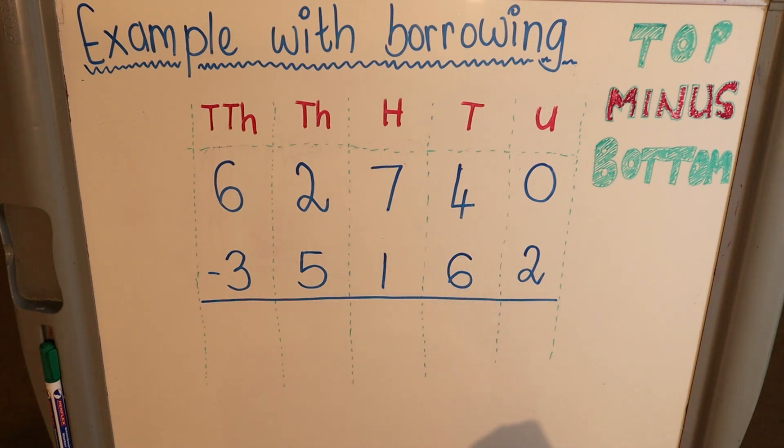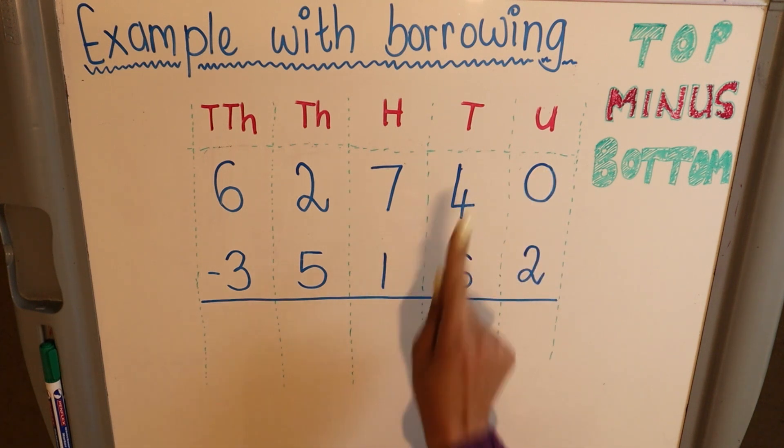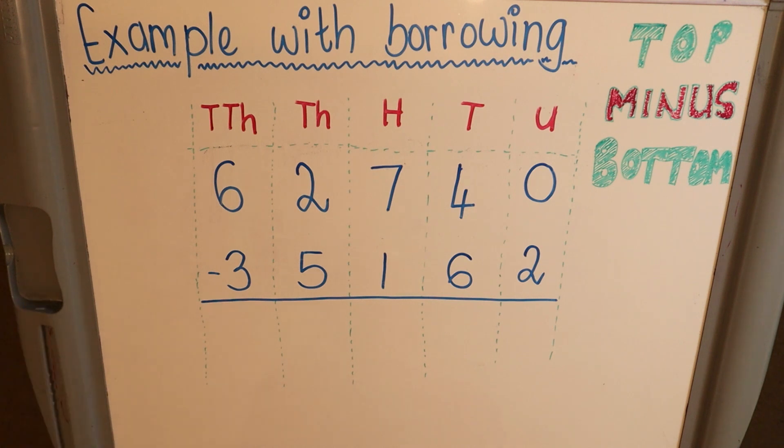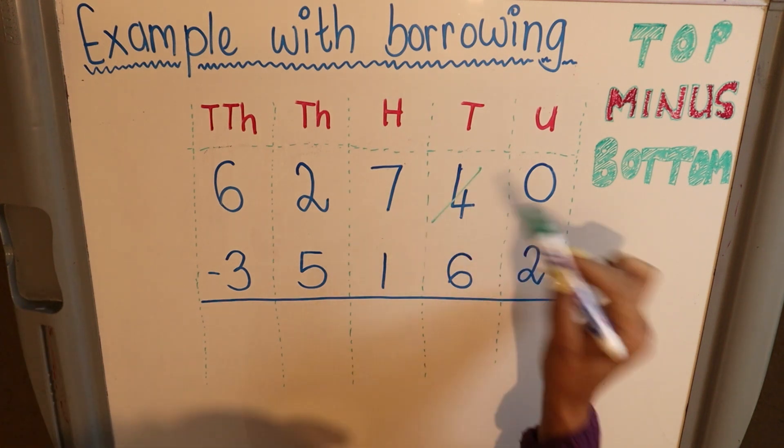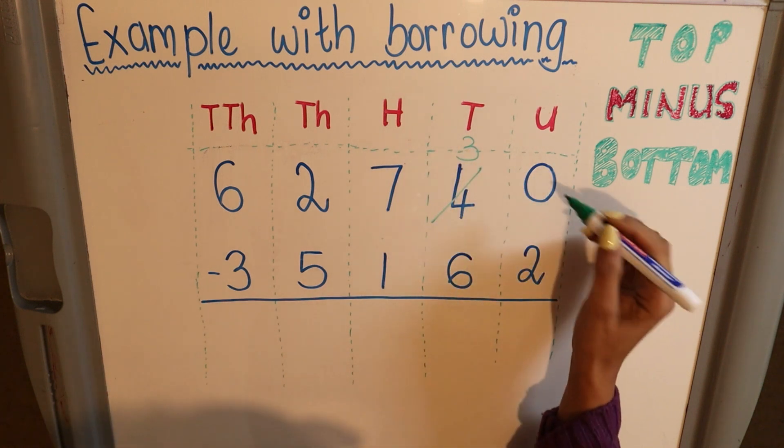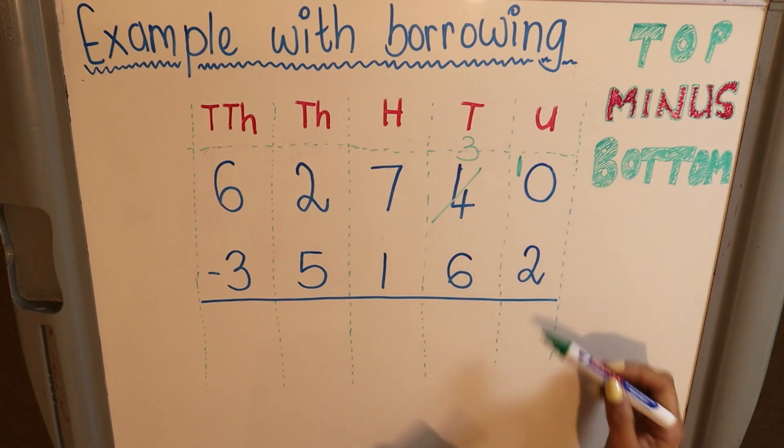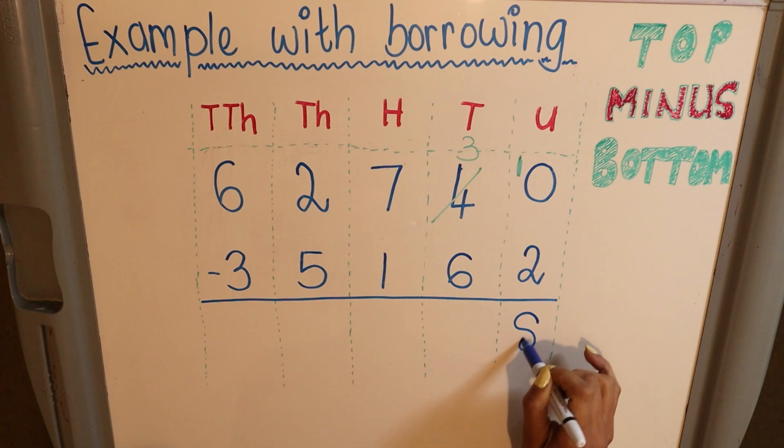So what I'm doing is I'm going to borrow from my tens. I borrow 1 from my tens. There's a 4. I borrow 1, there's 3 left, and the 10 that I borrowed I put over here. So now I have 10 minus 2, which is equal to 8.